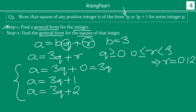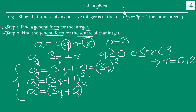At this point we have the general form for the integer itself — A can be 3Q, 3Q + 1, or 3Q + 2. Our question asks for the general form of the square of the integer, so we have to square A. Because A can be any of these three forms, we take each condition one by one and square each one separately.